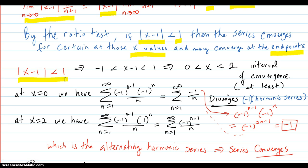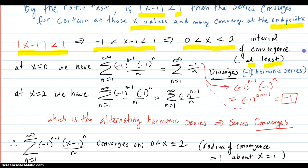If the absolute value of x minus 1 is less than 1, then that means x minus 1 is between negative 1 and 1. But you add 1 throughout and you get this. So here's your interval of convergence, at least, because maybe the endpoints work also.